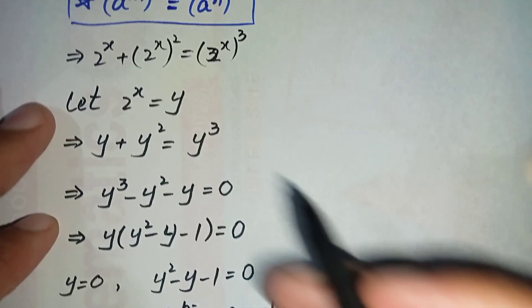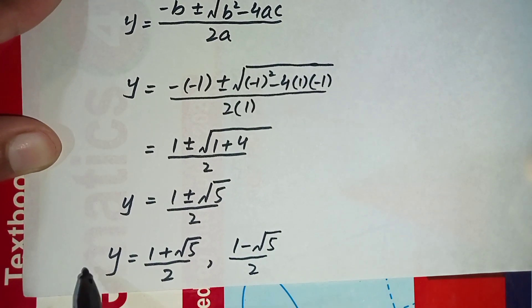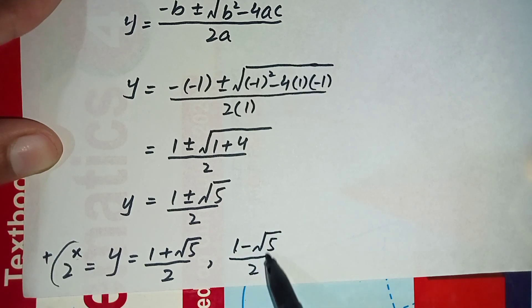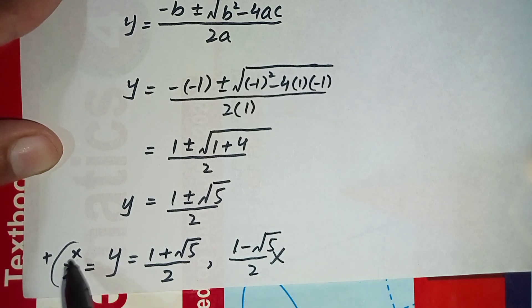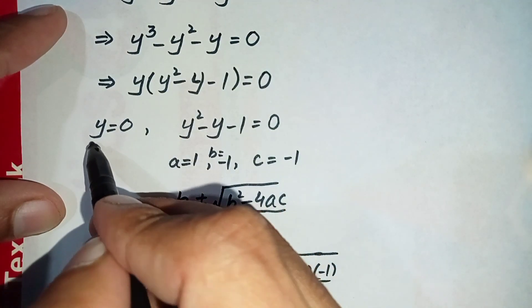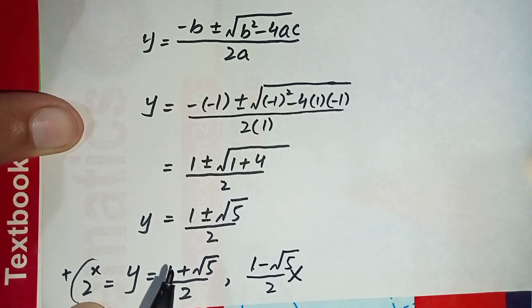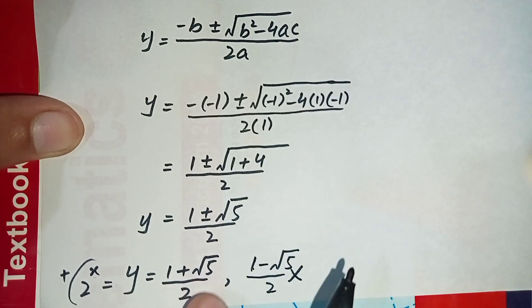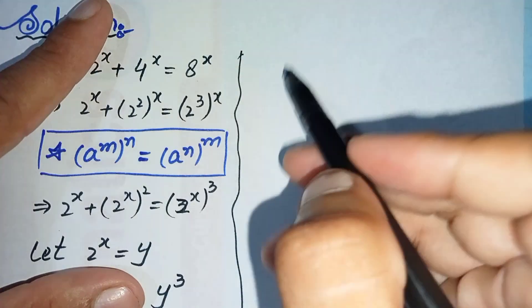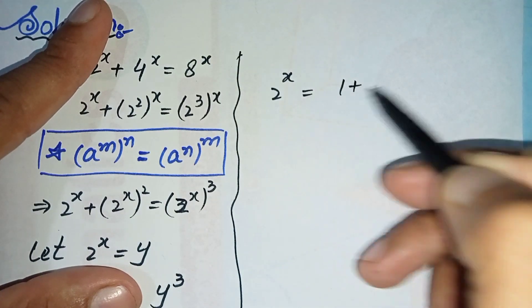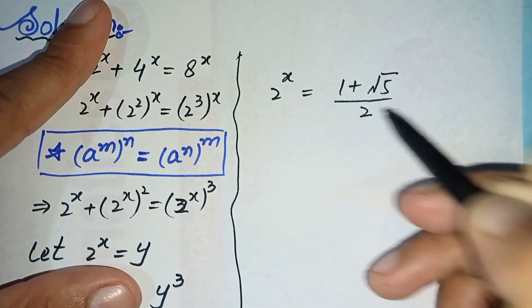Since y equals 2 raised to power x, and for any positive number 2 raised to power x is always positive, the value (1 minus square root of 5) divided by 2 is negative and is not a valid solution. So we only consider: 2 raised to power x equals (1 plus square root of 5) divided by 2.